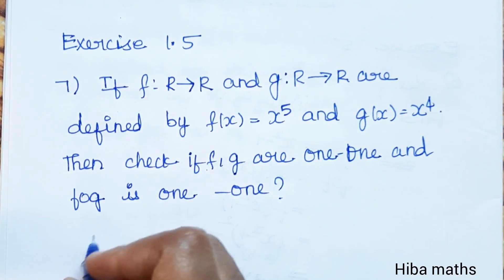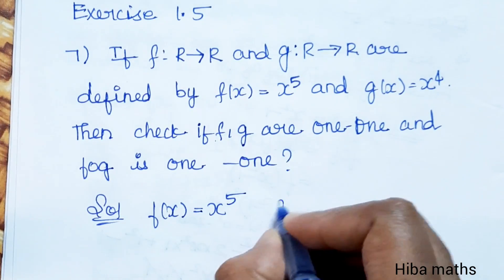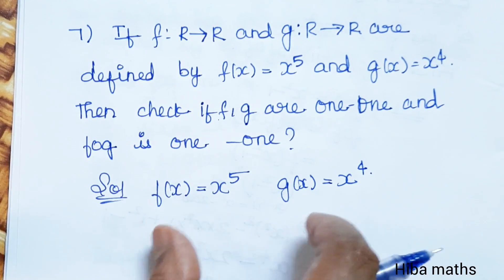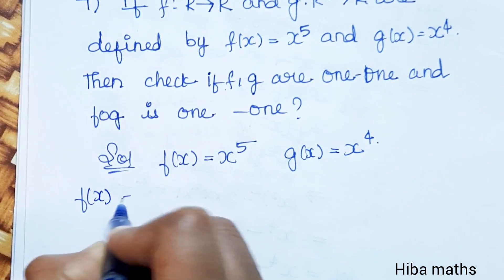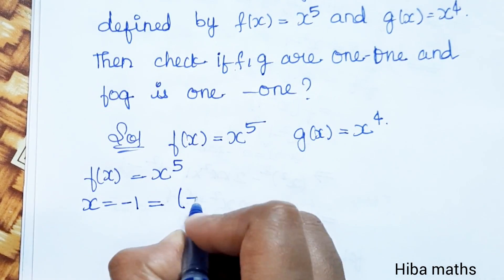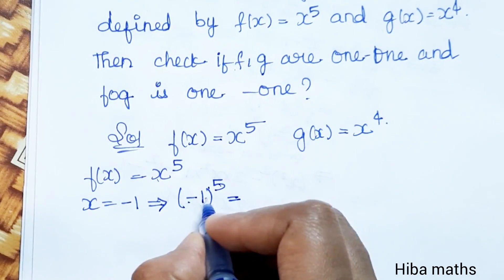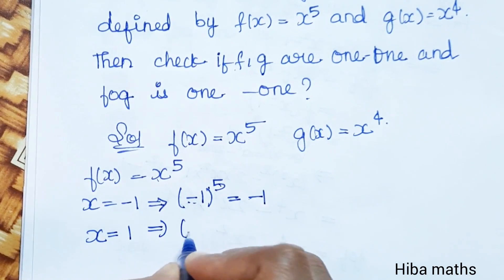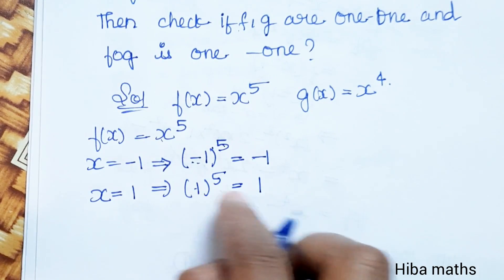First, for the solution: f(x) = x^5. Now if x is equal to minus 1, then x^5 with an odd power gives minus 1. So different objects give different images. Because 5 is an odd number, f(x) = x^5 gives different images for different inputs.